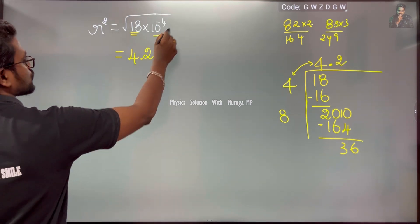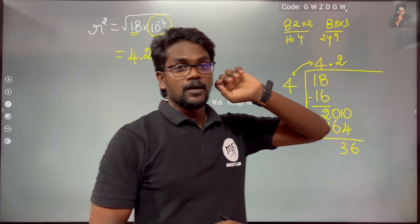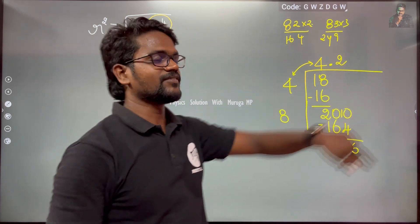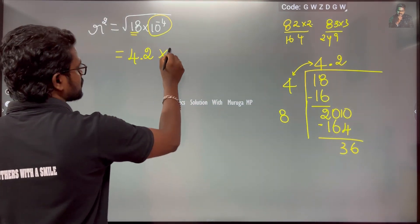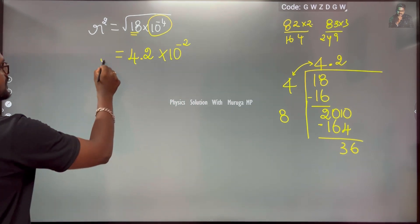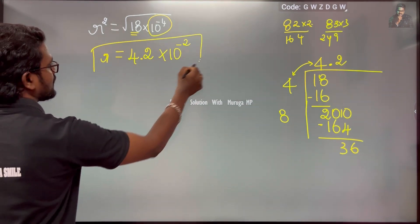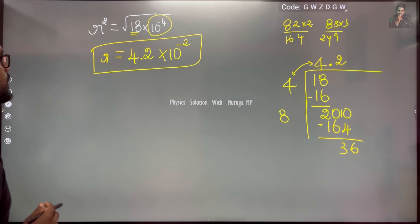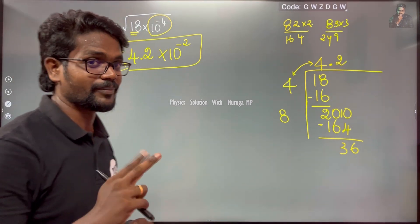And the square root of 10^-4 is 10^-2, because minus 4 divided by 2 gives minus 2. So r = 4.2 × 10^-2 meters.